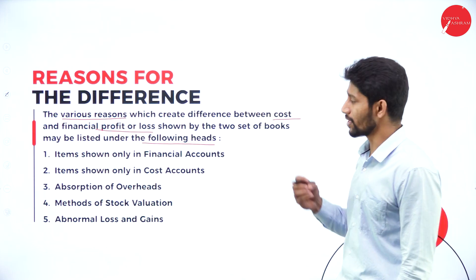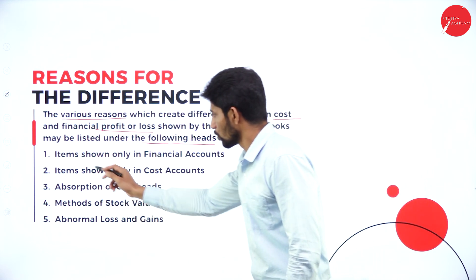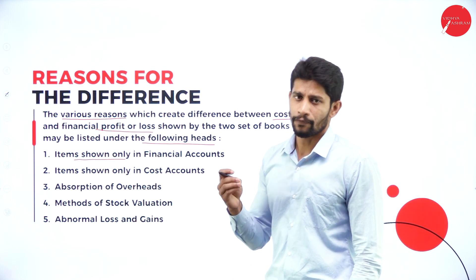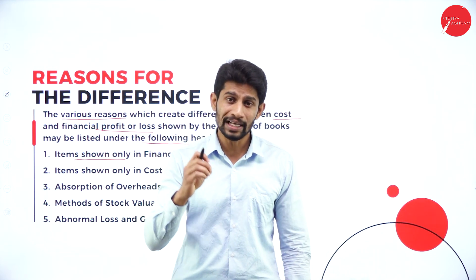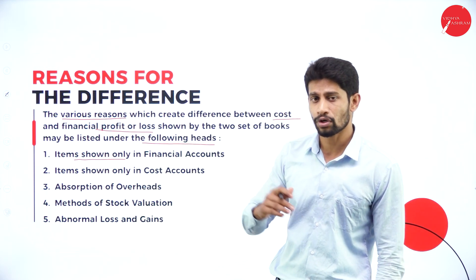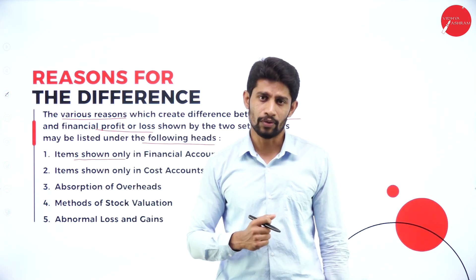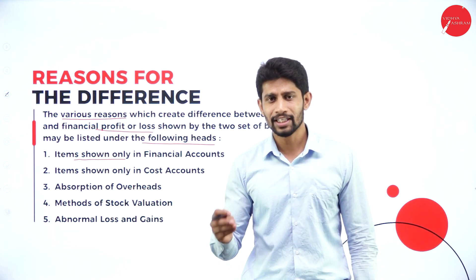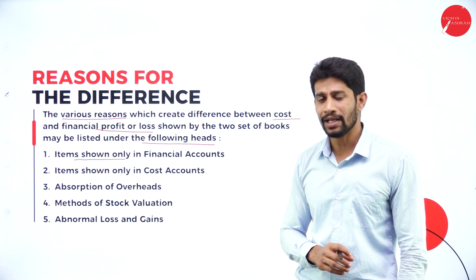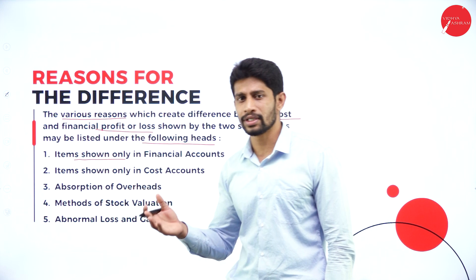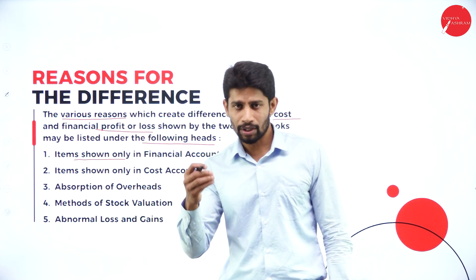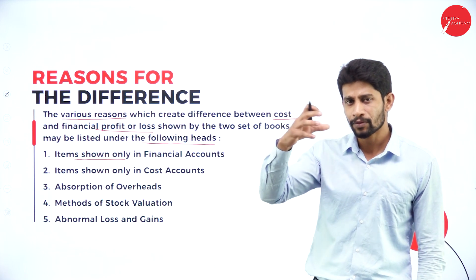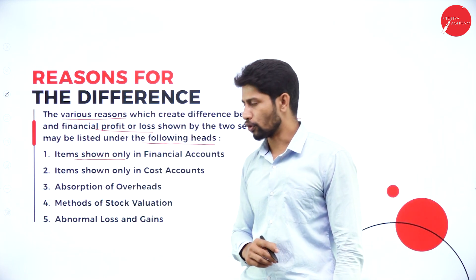Moving further — reasons for the difference. Why do financial books as well as cost books show a difference in profit? The various reasons which create a difference between cost and financial profit may be listed under the following heads. The first reason: items shown only in financial accounts. Sometimes a few items are shown only in financial accounts and those items are not shown in cost accounts. For example, if profit is received, that profit is shown only in financial accounts and not in cost accounts.